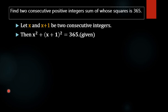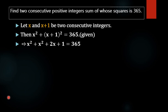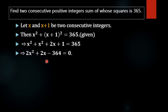On expanding using (a + b)² = a² + 2ab + b², we get: x² + x² + 2x + 1 = 365. That gives us 2x² + 2x minus 364 equals 0, since 1 minus 365 gives negative 364.